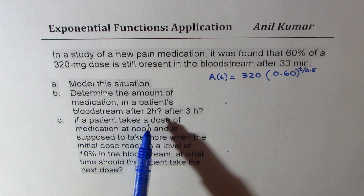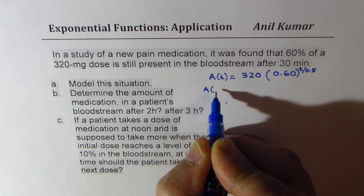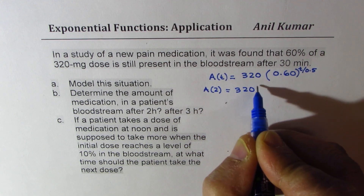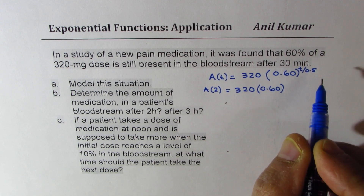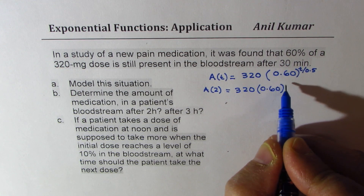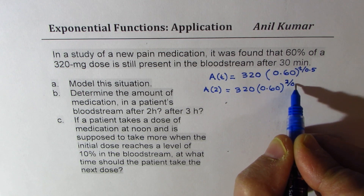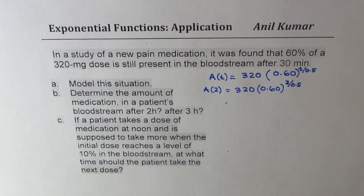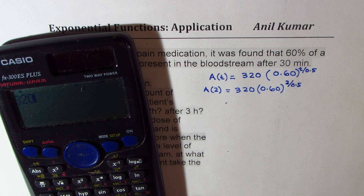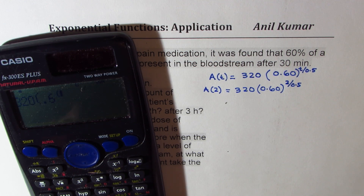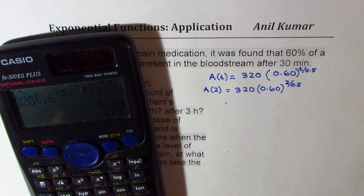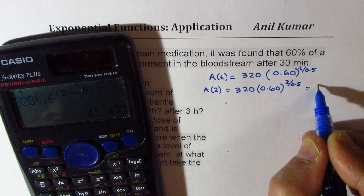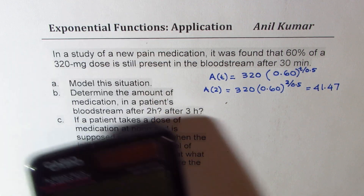Then we need to calculate how much medicine is left after 2 hours. A(2) will be 320 milligrams times 0.60 to the power of — we could write this as 2t, or I will write 2 divided by 0.5. Let's calculate: 320 times 0.6 to the exponent of 2 divided by 0.5, which equals 2. In decimals, that is 41.47, or approximately 41.5 milligrams.